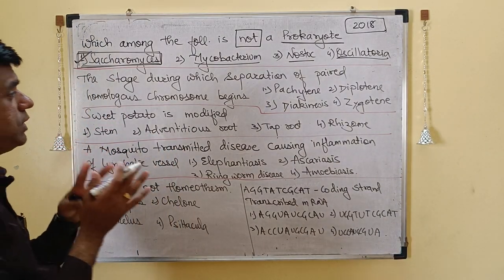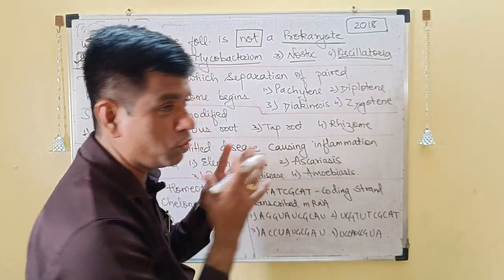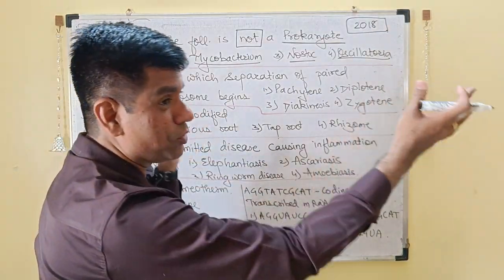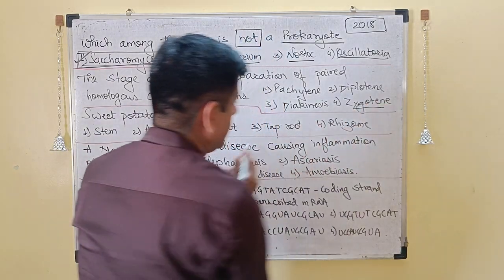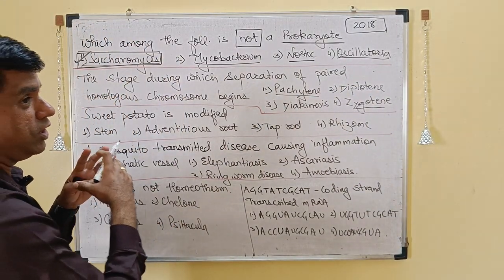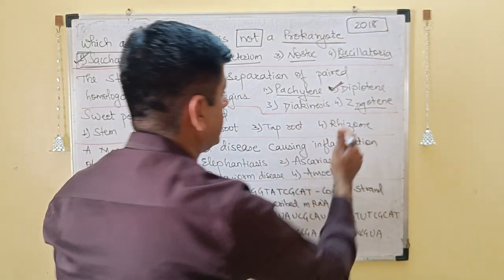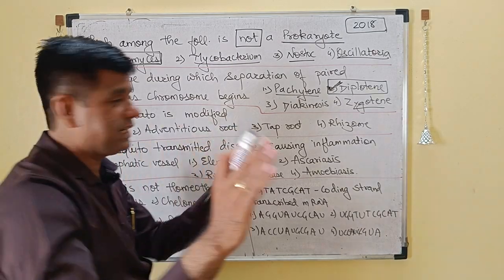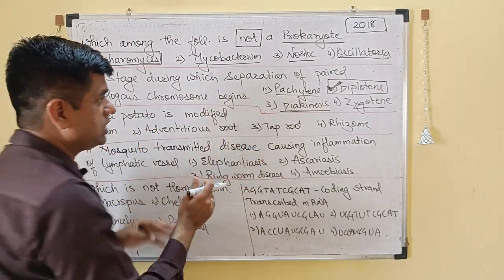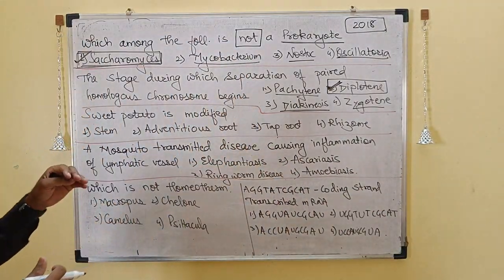Next one: the stage during which the separation of paired homologous chromosomes begins. So we are talking about meiosis, specifically meiosis I, prophase I. When the chromosomes come together, that is your Zygotene. They pair in Zygotene, they cross over each other in Pachytene. And now they are moving away from each other — that is in your Diplotene. So homologous chromosomes start separating in Diplotene, and they are completely separated in diakinesis. So separation starts in Diplotene phase of prophase I of meiosis I.